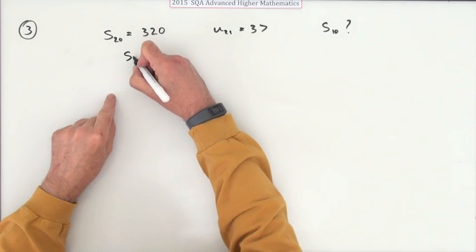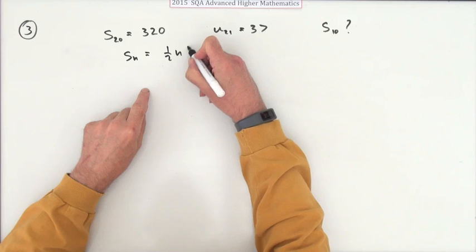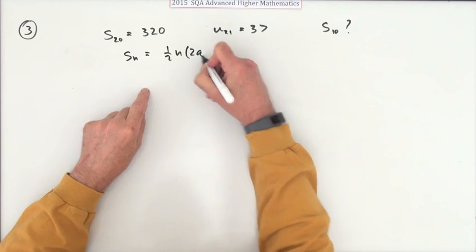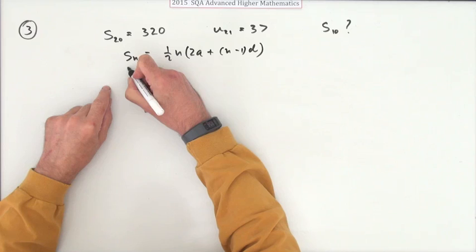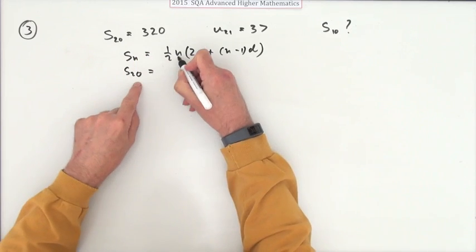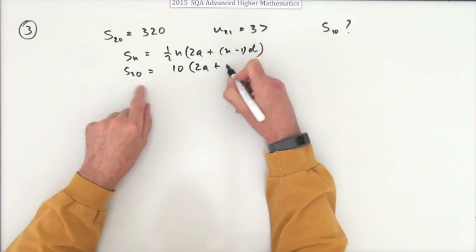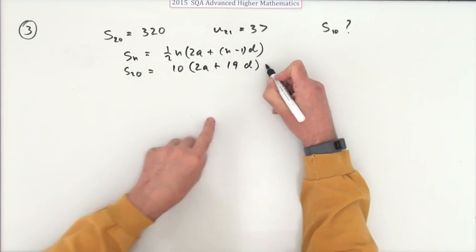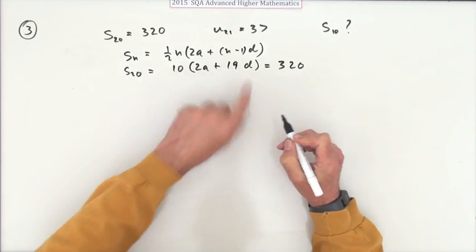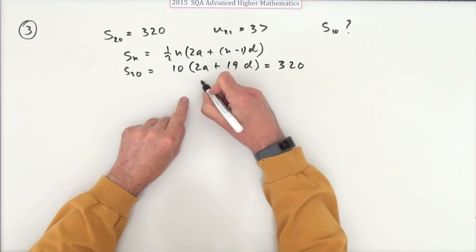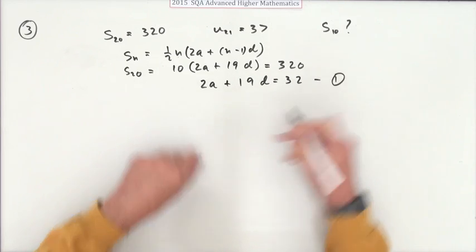If it's an arithmetic series, the sum of the first n terms would be a half of n times the first and the last, or 2a plus n minus 1d. So if I know S₂₀, that means it'll be a half of 20, which is 10. I don't know what a is, but I know what n minus 1 is, that'll be 19. And I know the total comes to 320. So I can get an equation from this involving a and d. Divide by 10, I've got 2a plus 19d equals 32. There's an equation.